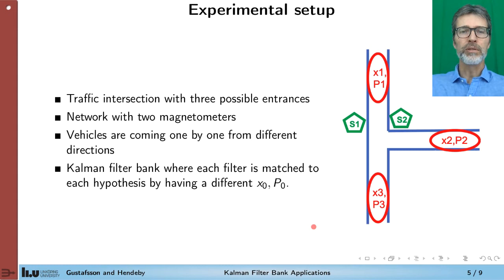So the experimental setup is that we are monitoring a three-way intersection. We have two sensors. We have three different hypotheses and it's these three hypotheses of how the vehicle is coming to the intersection that gives rise to the need for a Kalman filter bank. So we will initialize each Kalman filter according to these three hypotheses.